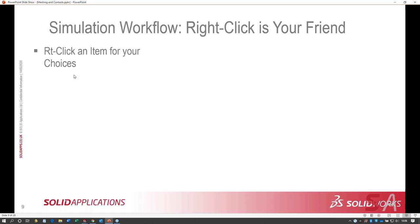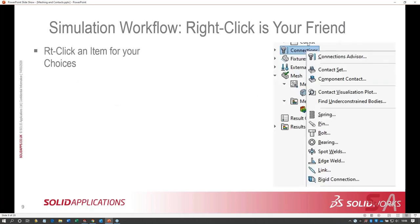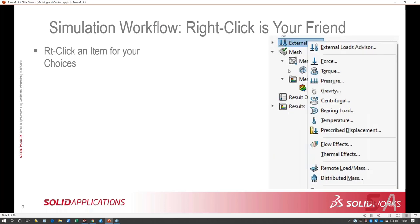Right-click is your friend. You right-click an item and get a lot of choices. The connections folder, when right-clicked, shows a dropdown enabling you to create a contact set or component contact, or different types of connectors — spring, pin, bolt, bearing, etc. The external loads folder right-click gives a whole list of all the different ways to put in loads — quite a list, and each one has a lot of detail inside.